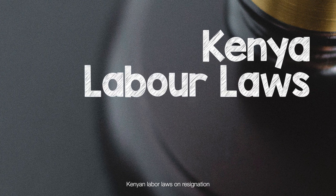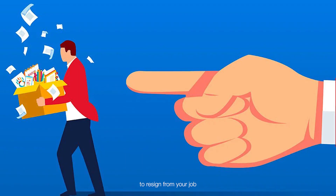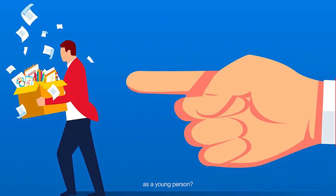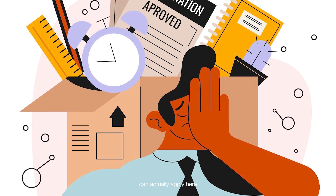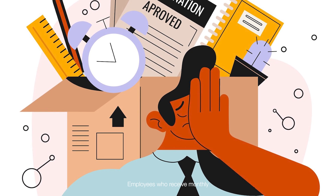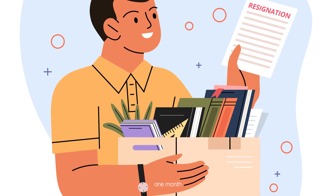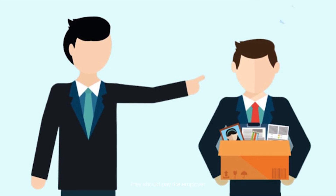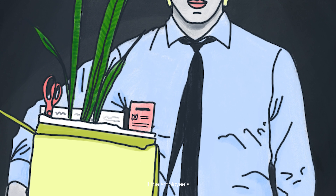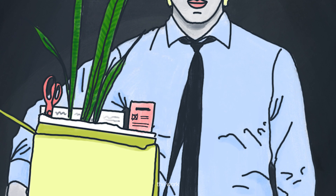Let us understand Kenyan labor laws on resignation. If you want to resign from your job, what should you do as a young person? Resignation is a notice that you're quitting your job. Labor laws in Kenya on resignation are under the Employment Act. Employees who receive monthly payments must inform the employer one month before they stop working. If an employee does not give the employer the notice, they should pay the employer the equivalent of the wages for that period. If the employee's resignation violates a contractual obligation, they may be liable for damages.